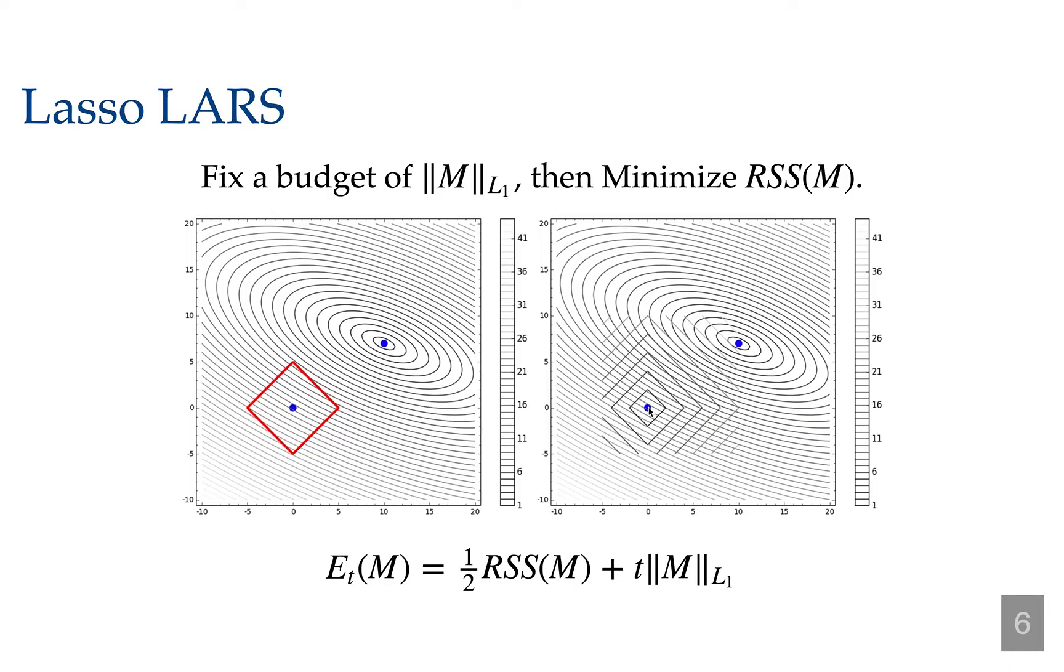In a high dimensional version of this picture, first you're moving along a corner, and then you're moving along an edge, and then you're moving along a two dimensional face. So that's first you use one variable and then you use two variables equally. And then you use a third variable and you use those three equally, and so on.